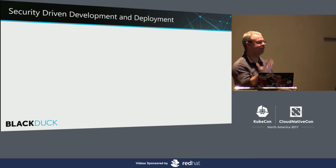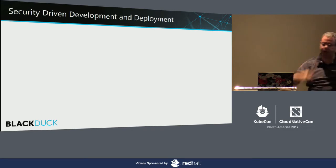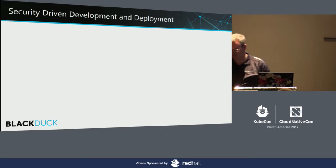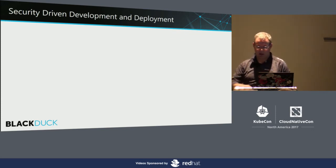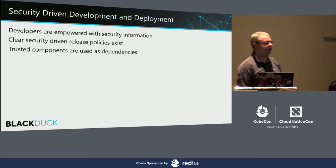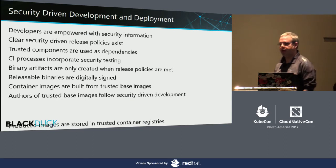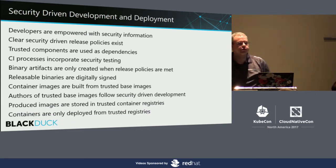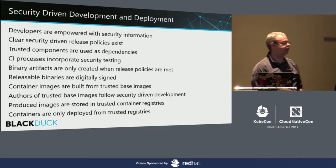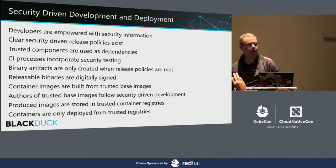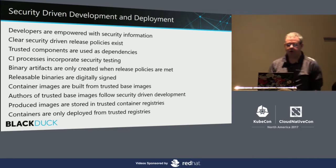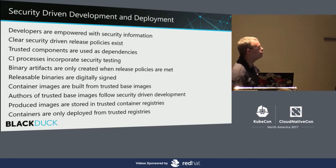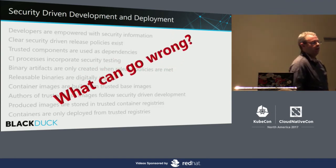I have to take a step back. The approach I embrace right now goes by varying names, but I call it security-driven development. The assertions are: developers are empowered with how security information should be consumed and how tests should be created; release policies around security are in place; trusted components are used; security testing is part of your CI loop; binary artifacts are only created when release policies are met; the binaries themselves are digitally signed so you know where they come from; container images are built from trusted images and only deployed from trusted registries — and so on. And what can possibly go wrong?